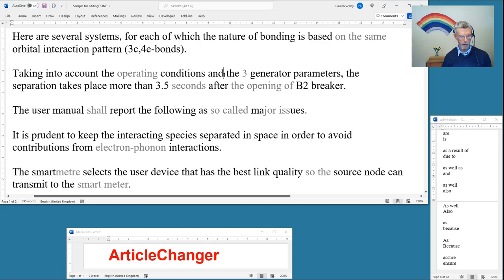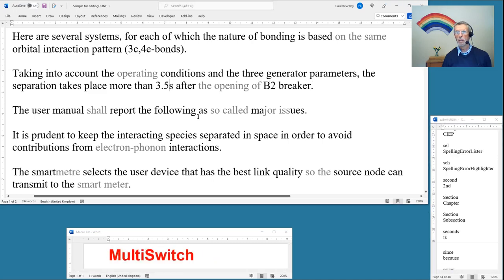This is a figure, we want that to be a number. The separation would take place more than, well we like seconds rather than. So again, it's multi-switch that can do that. After the operating of B2 breaker, sounds better if we delete of and switch that round. So after opening the B2 breaker, that flows much better.